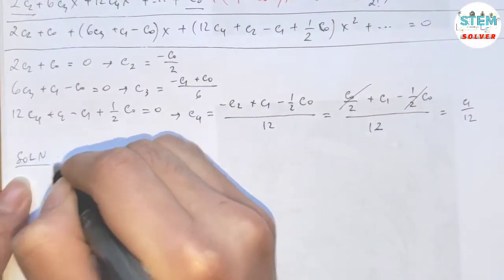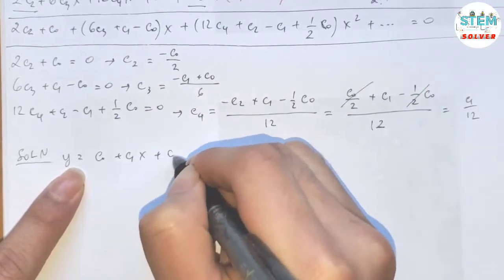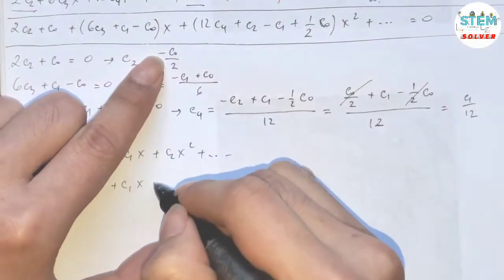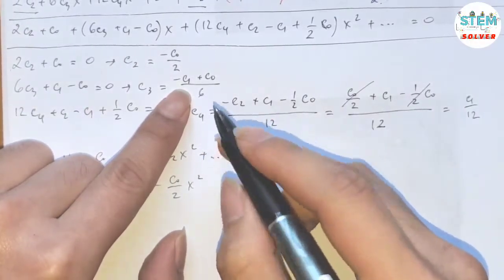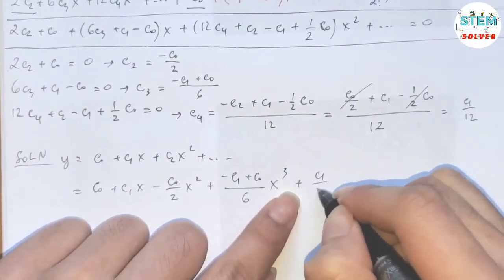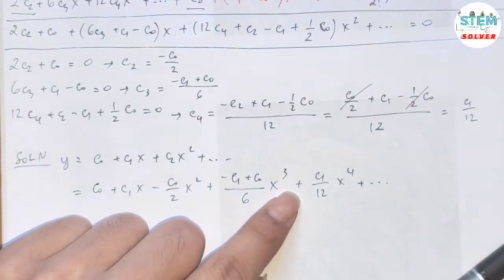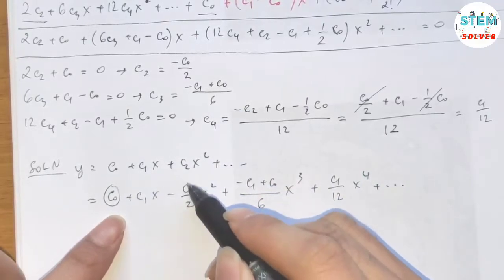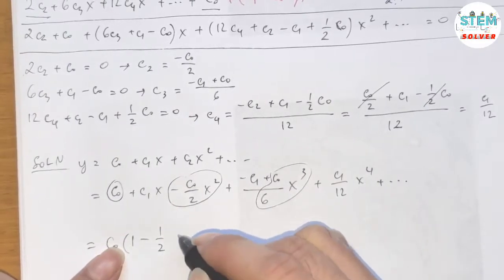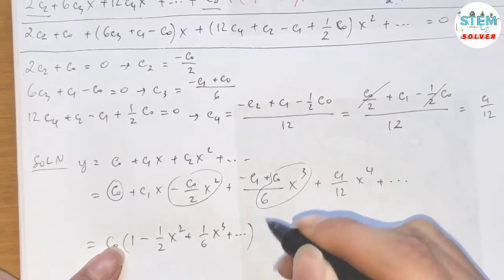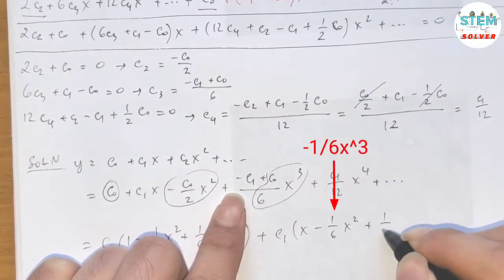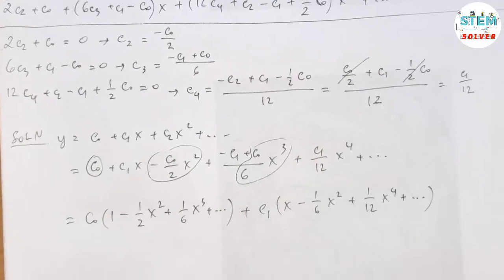Our final solution is y equals c_0 plus c_1 x plus c_2 x squared plus c_3 x cubed plus c_4 x to the fourth, plus dot dot dot. Substituting: c_2 is negative c_0 over 2, c_3 is negative c_1 plus c_0 over 6, c_4 is c_1 over 12. Factoring out c_0 and c_1: y equals c_0 times (1 minus 1 half x squared plus 1 sixth x cubed plus dot dot dot) plus c_1 times (x minus 1 sixth x squared plus 1 twelfth x to the fourth, plus dot dot dot). This is your final solution.